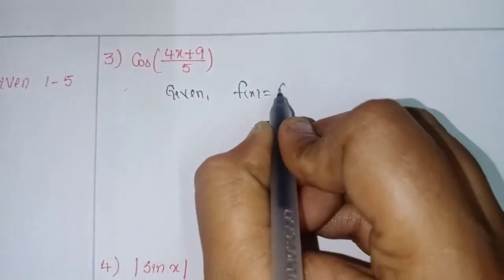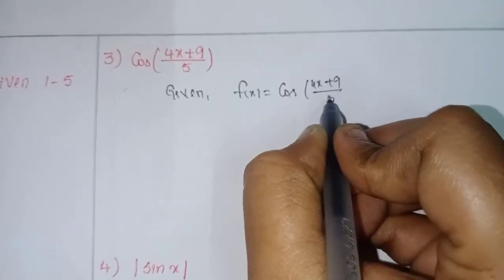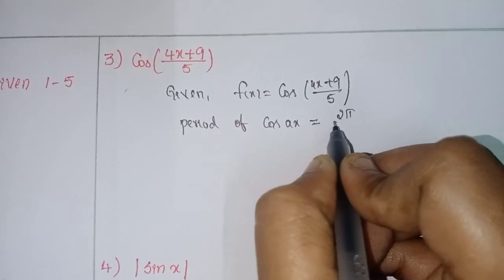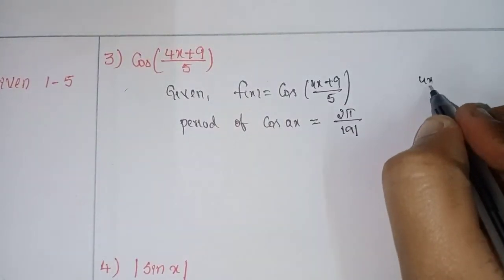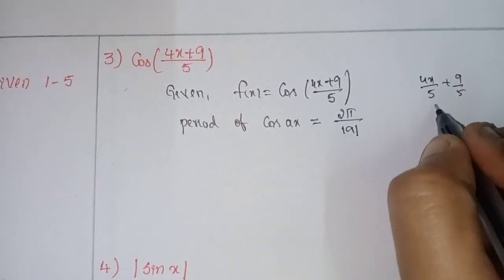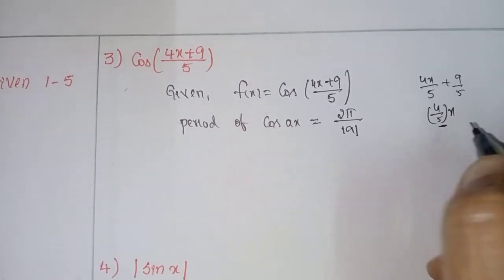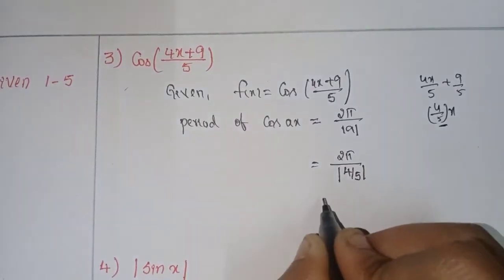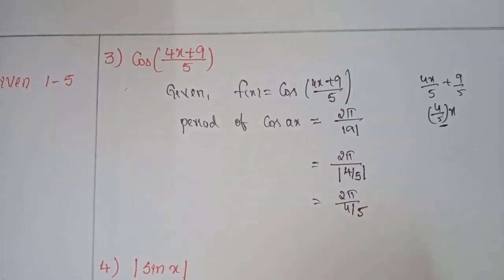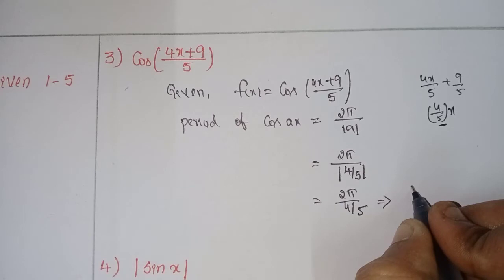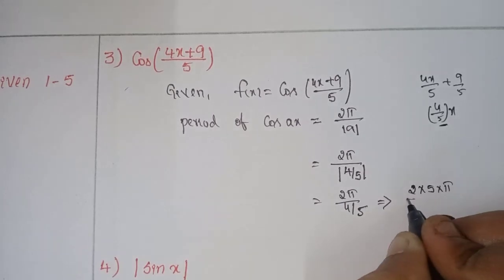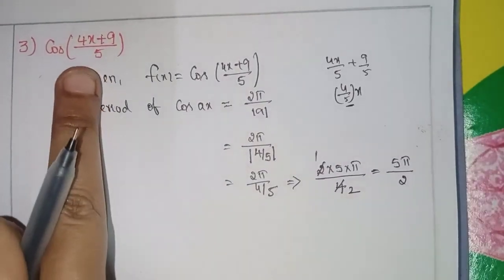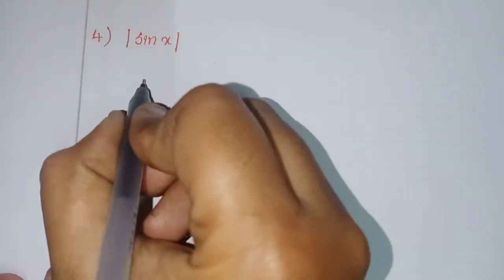Next given function: f(x) = cos((4x + 9)/5). The period of cos(ax) = 2π by modulus of a. We can write this as (4/5)x + 9/5, so in the place of a, 4/5 is there. Substituting: 2π by modulus of 4/5 equals 2π × 5/4, which gives 5π/2. So 5π/2 is the period of this function.